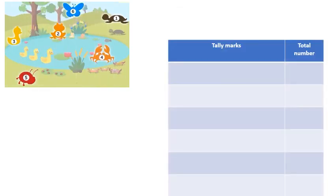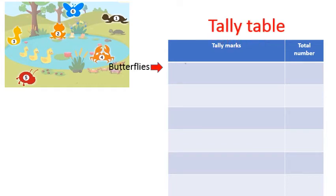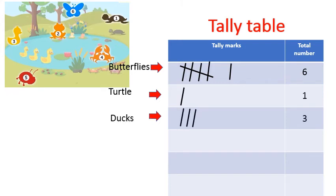Let's see how to record the data we collected from our picnic. There were 6 butterflies. So we draw 1, 2, 3, 4, 5 and one more tally to show it is 6. Turtle 1, Ducks 3, Frogs 2, Beetles 5, and crabs 4.